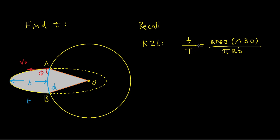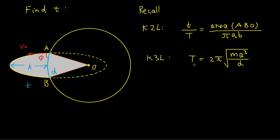Therefore, the flight time t divided by the orbital period T equals the area of the elliptic sector ABO divided by πab (the total ellipse area), where b is the semi-minor axis. The period T is given by Kepler's third law: T = 2π√(ma³/α). Using our earlier expression a = r/(2−k), we can write out an expression for T.